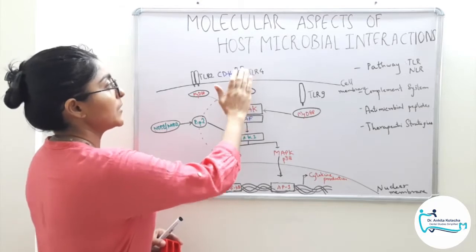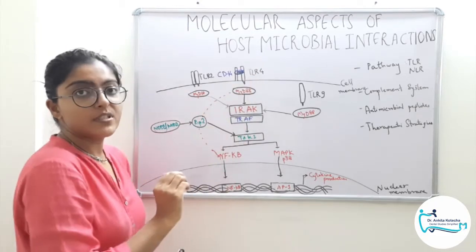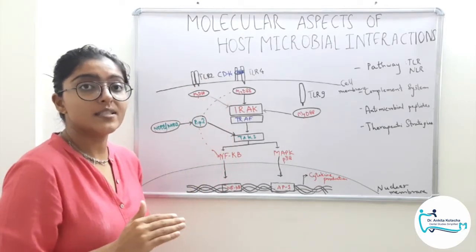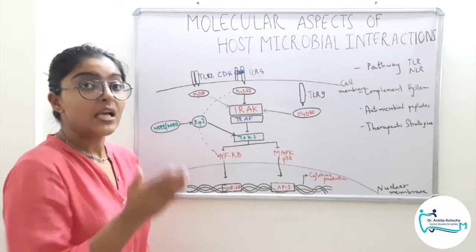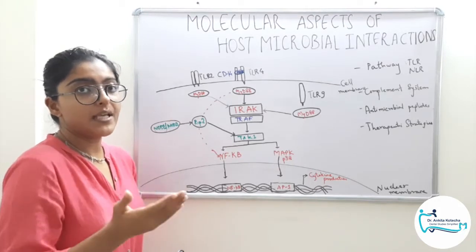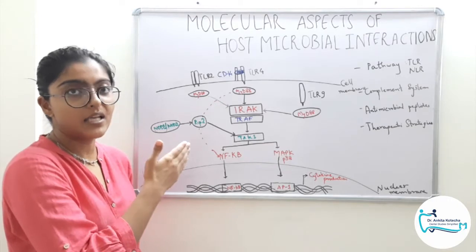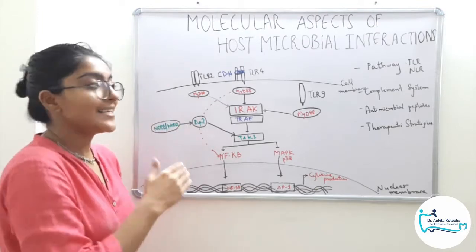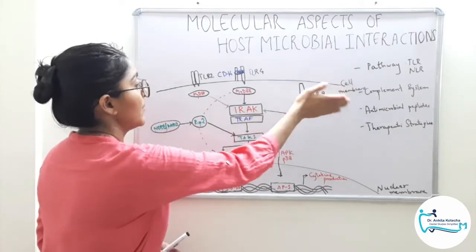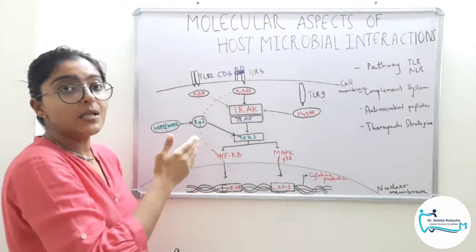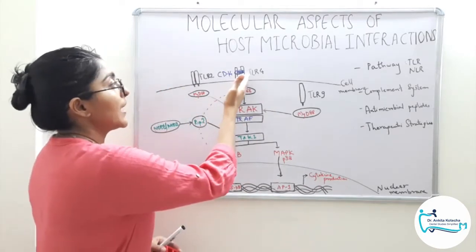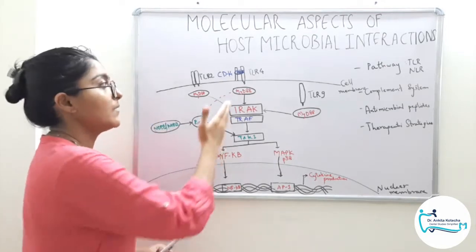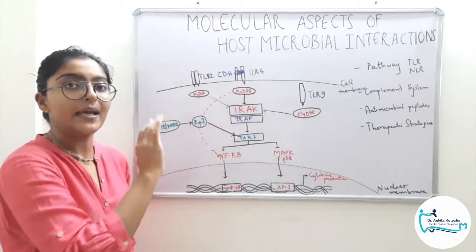TLR4 contains an N-terminal, myeloid differentiation factor 2 (MD2), and accessory proteins CD14 and lipopolysaccharide binding protein (LBP). LBP, as the name suggests, binds lipopolysaccharide and delivers it to CD14. CD14 then sensitizes the cell membrane. The cell becomes sensitized to LPS after binding with the TLR4-MD2 complex. So it is now clear that lipopolysaccharide binds with TLR4 via this mechanism.